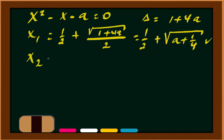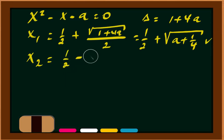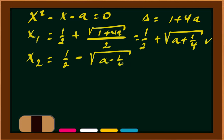The second root x2 equals one half minus square root of (a plus one quarter).